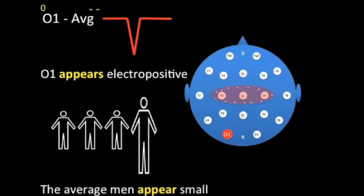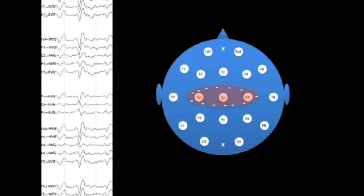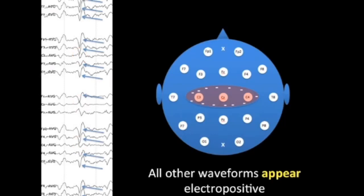O1 appearing electropositive is similar to the average men appearing small in our analogy. When we switch to an average reference montage, while C3, C4, and Cz are truly electronegative, there is also the false impression that all other waveforms are electropositive. This is not a true electrical phenomenon but rather an example of reference contamination.